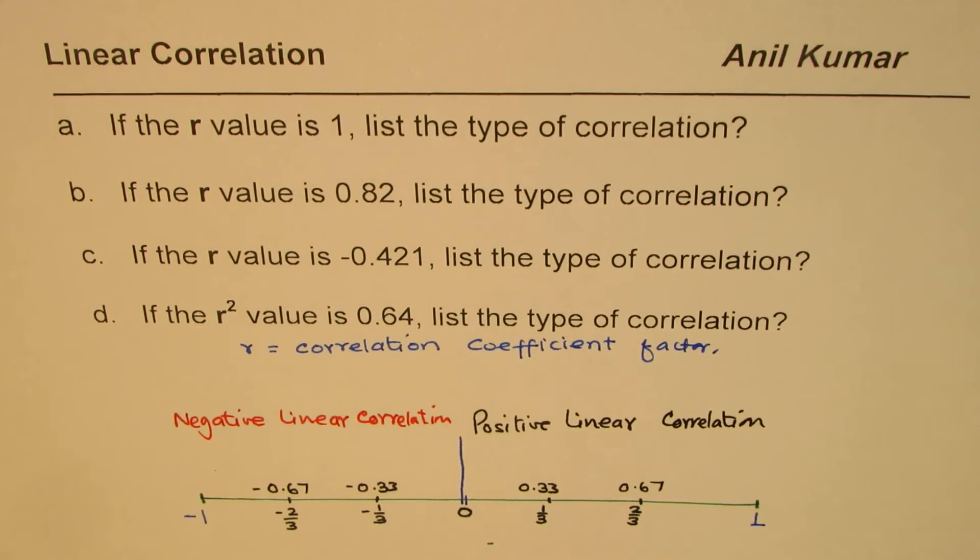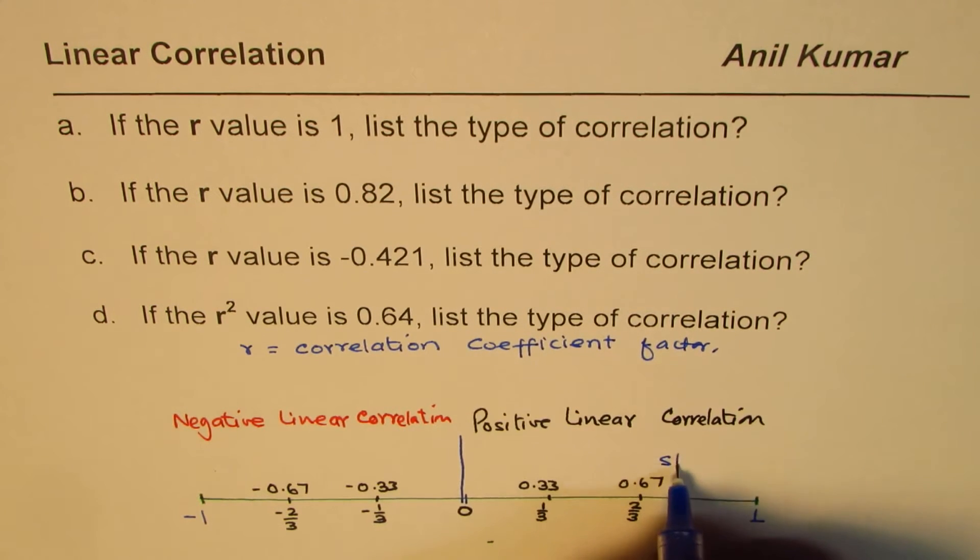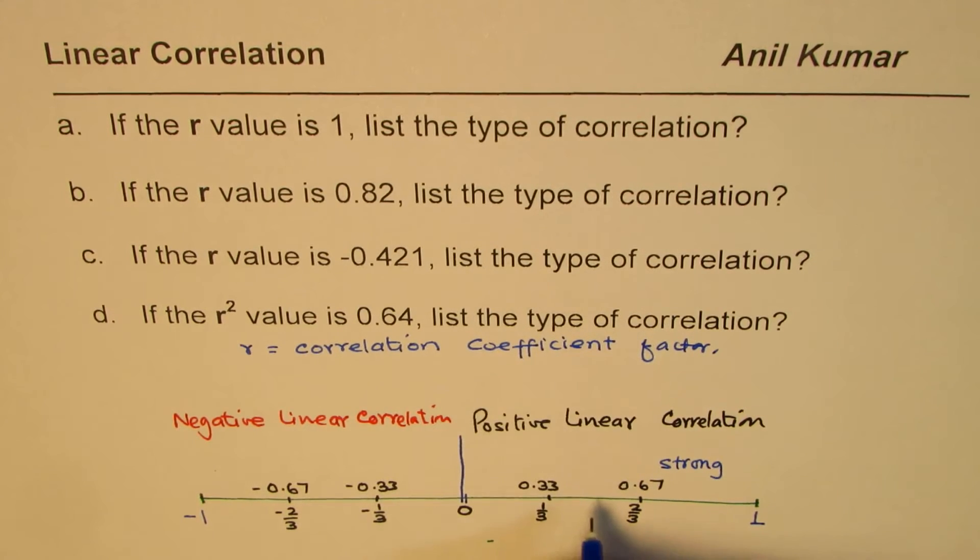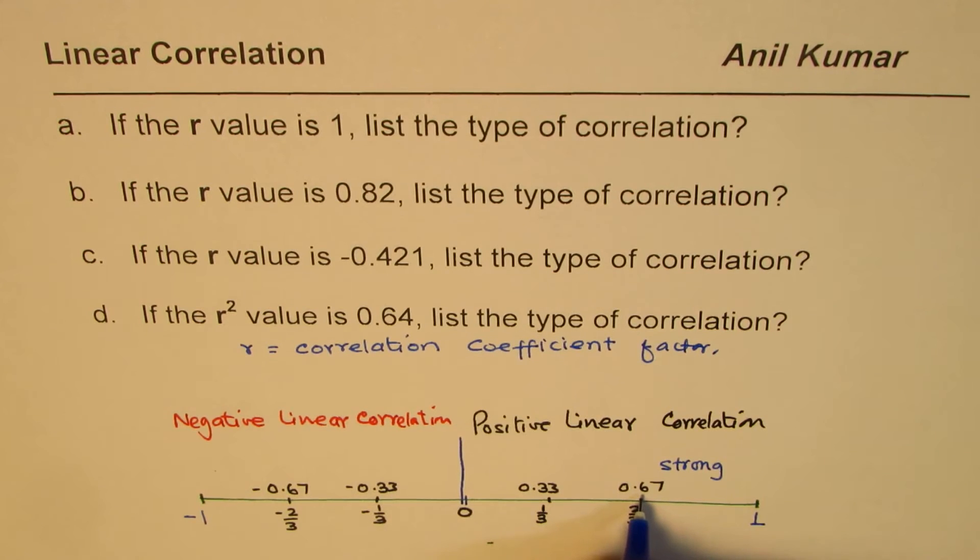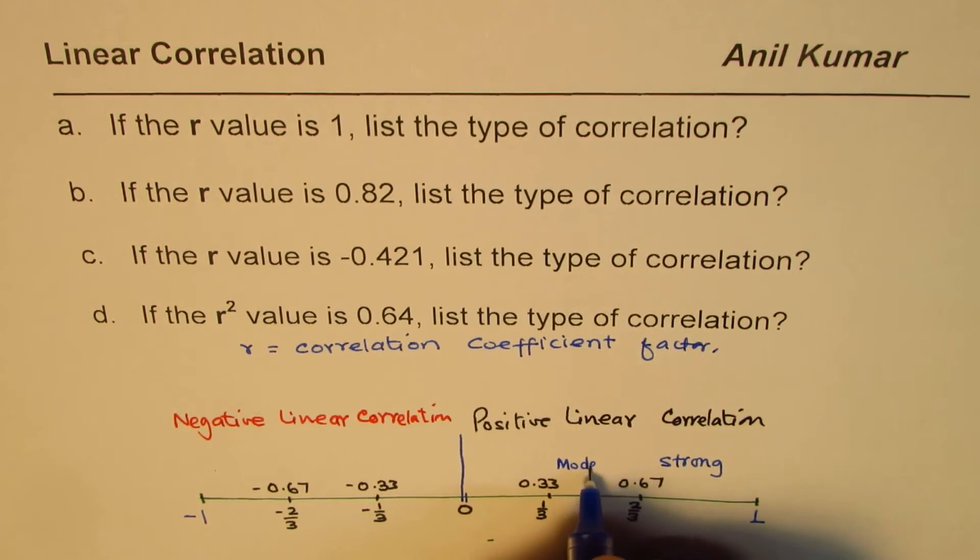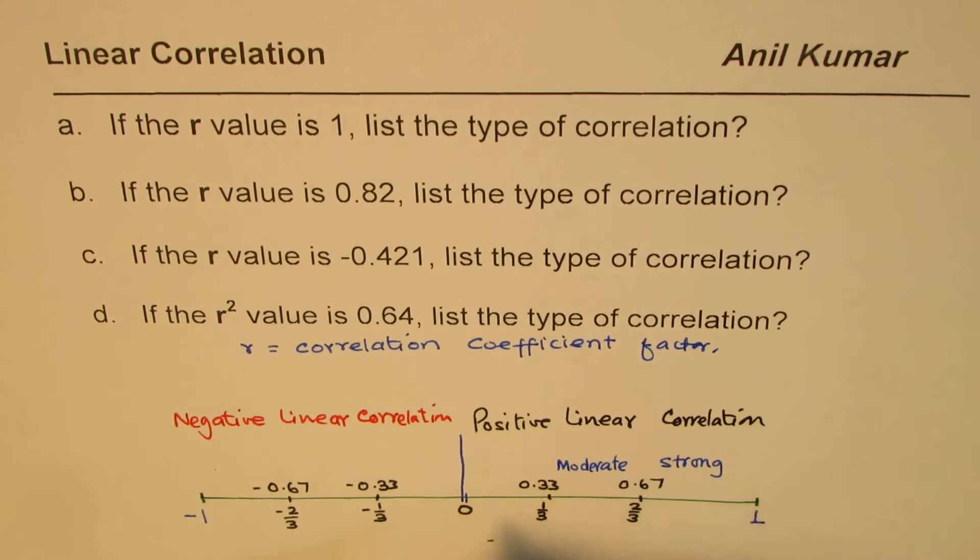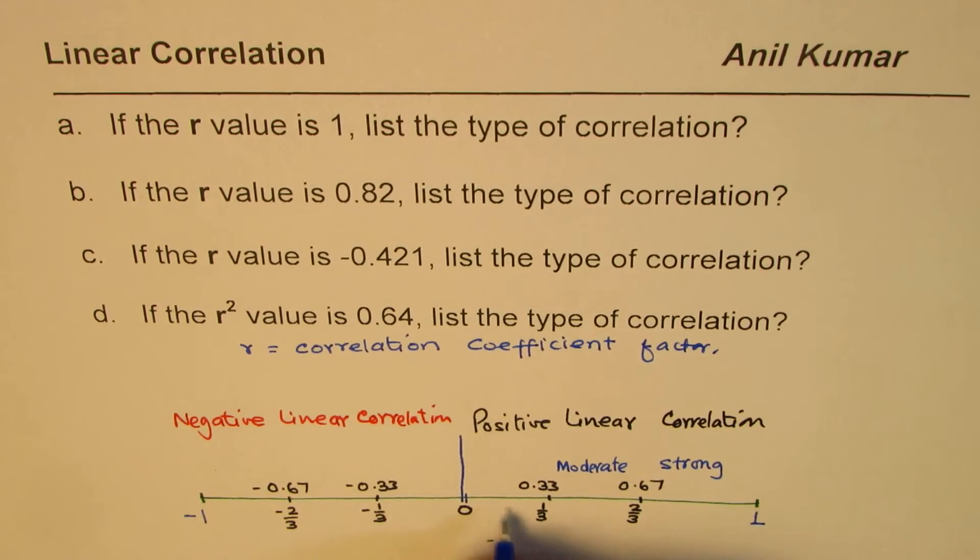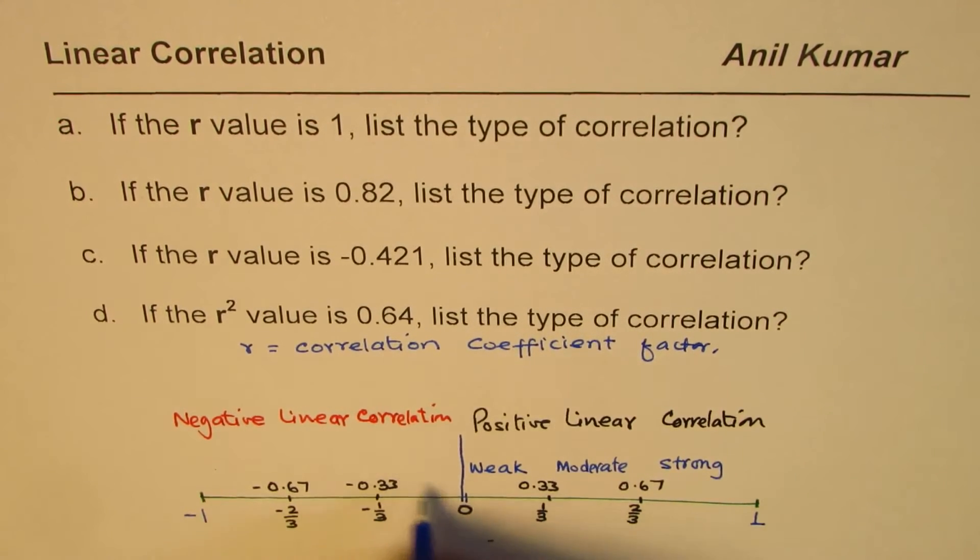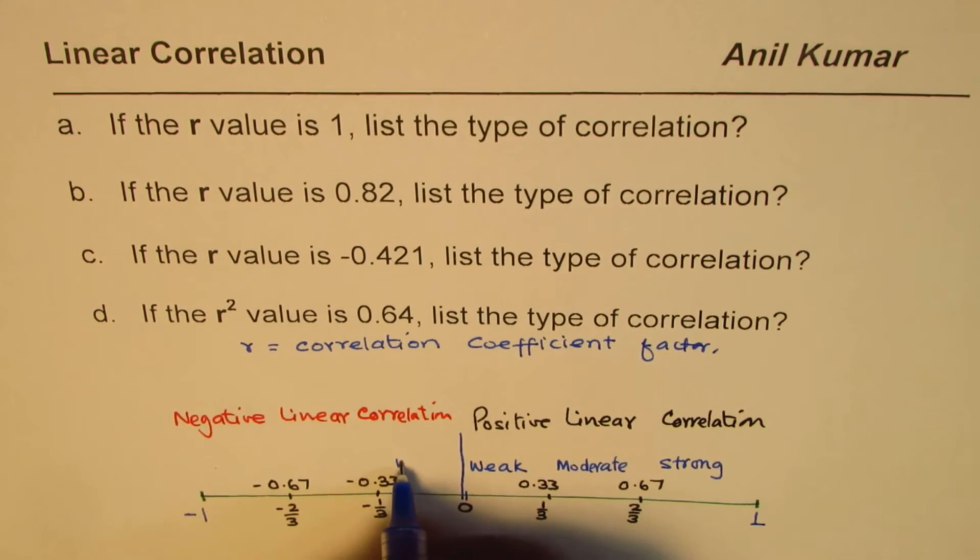If the correlation is between 0.67 to 1, we say it is strong. And in case it is 0.33, if it is less than 0.33, we treat this correlation as weak. Same thing is on the negative side also.